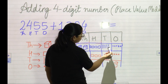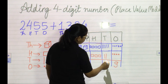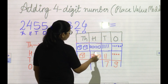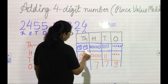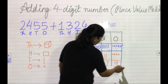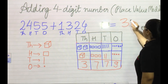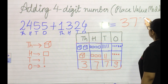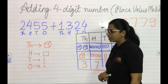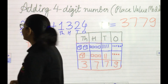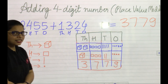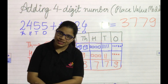Then lines: one, two, three, four, five, six, seven lines. Then squares: one, two, three, four, five, six, seven. Then cubes: three. So the answer is 3779. Did you get the same answer? The answer is 3779.